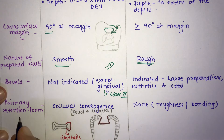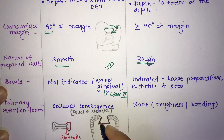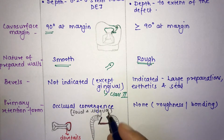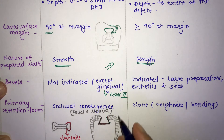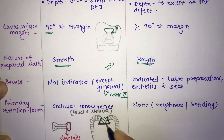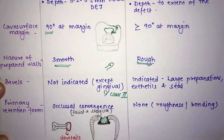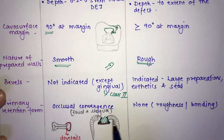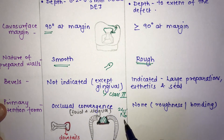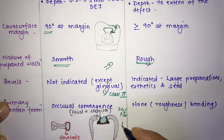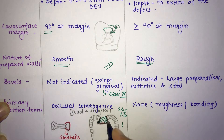The next difference is the primary retention form. In amalgam, it is the occlusal convergence given in the preparation. The walls converge occlusally so that the amalgam locks into the corners and sides of the cavity and is retained, preventing it from coming out. The number 245 bur is convergent by design, giving you this occlusal convergence.